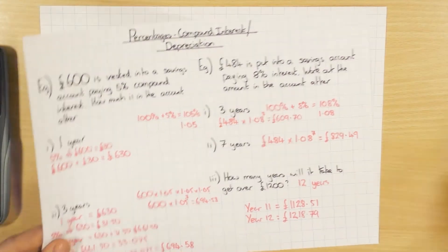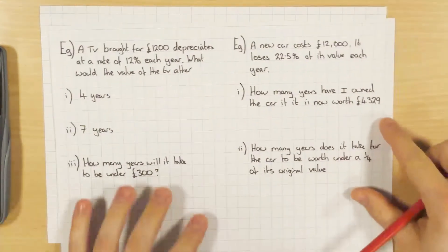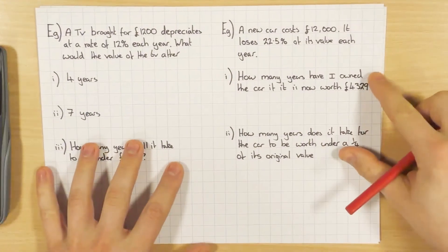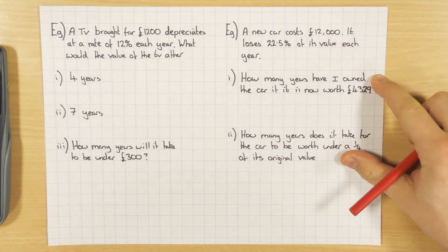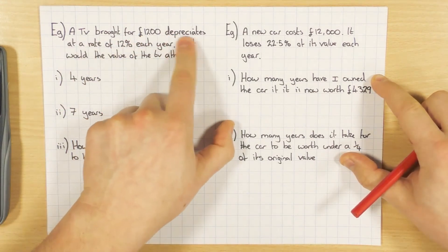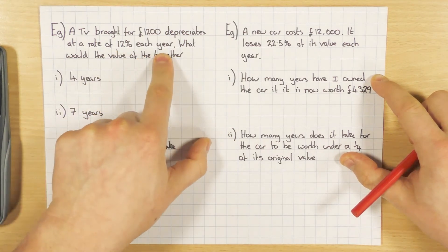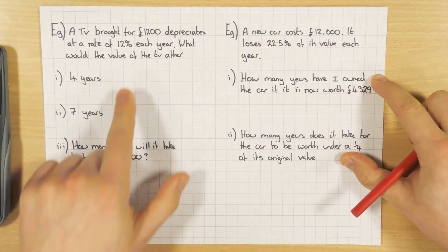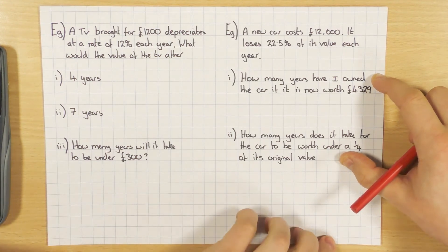Now let's look at some more examples. In these next examples, we're going to have a look at depreciation, which is obviously decreasing — so it's going down. A TV bought for £1,200 depreciates at a rate of 12% each year. What will the value be after four years and after seven years?